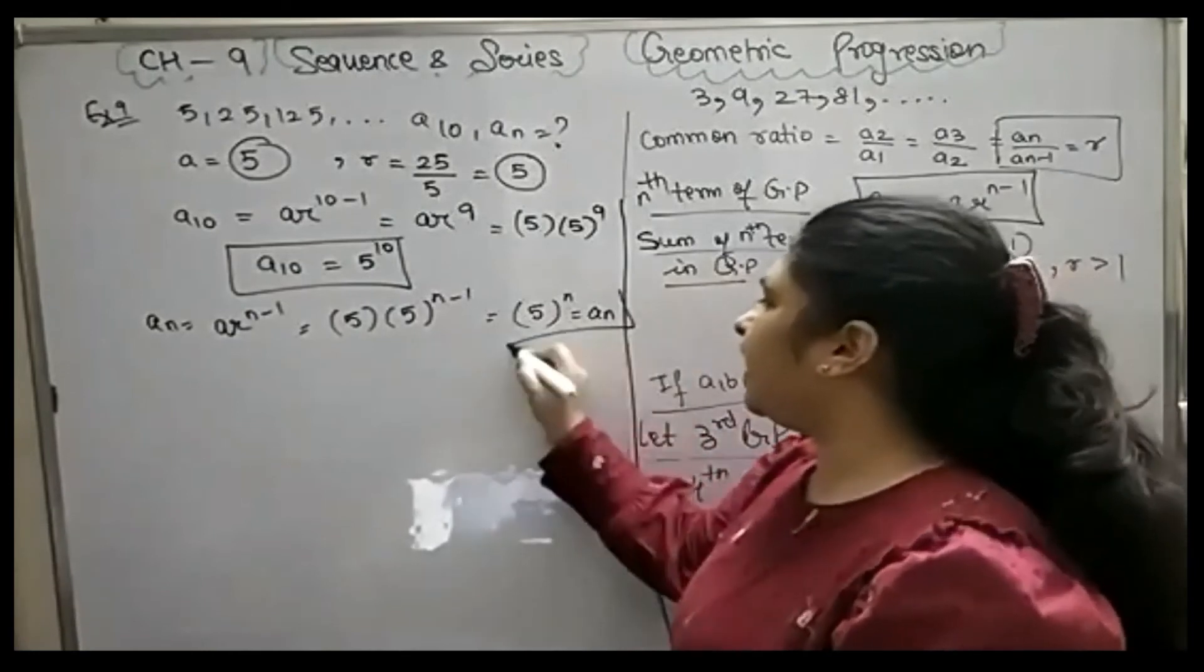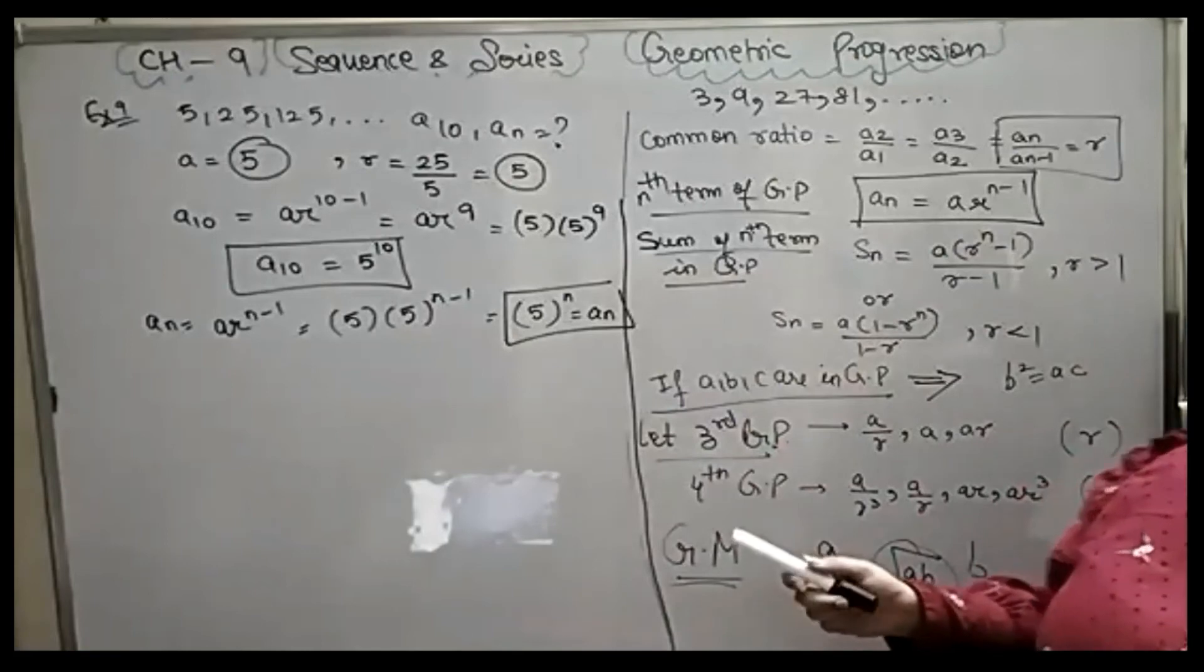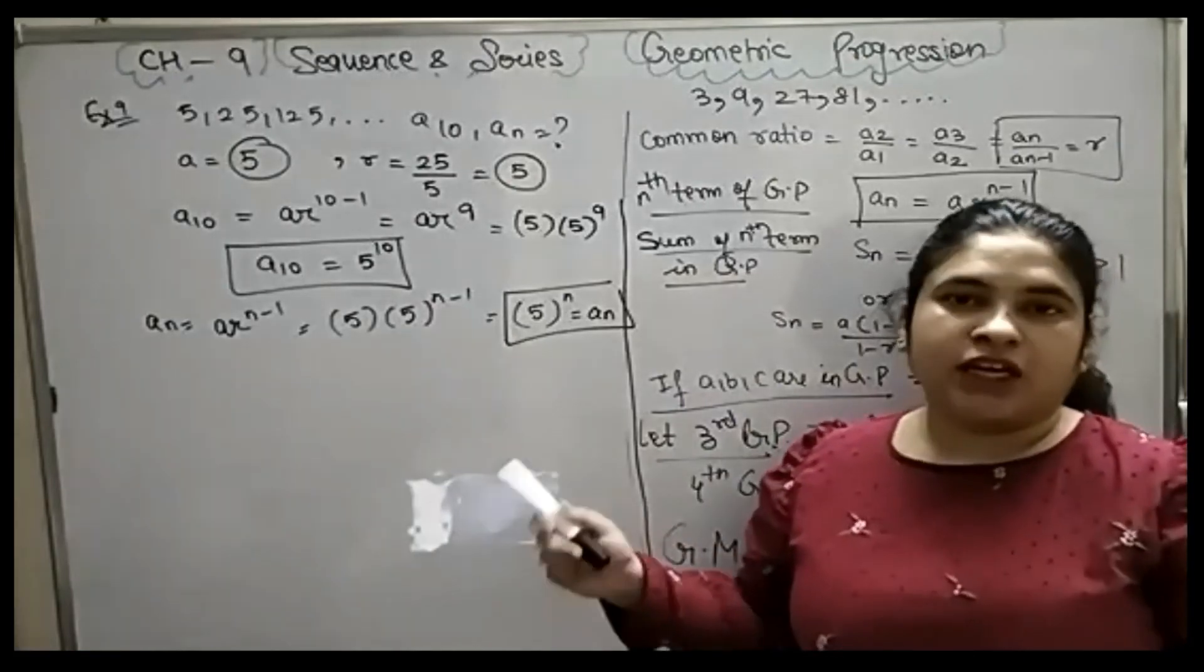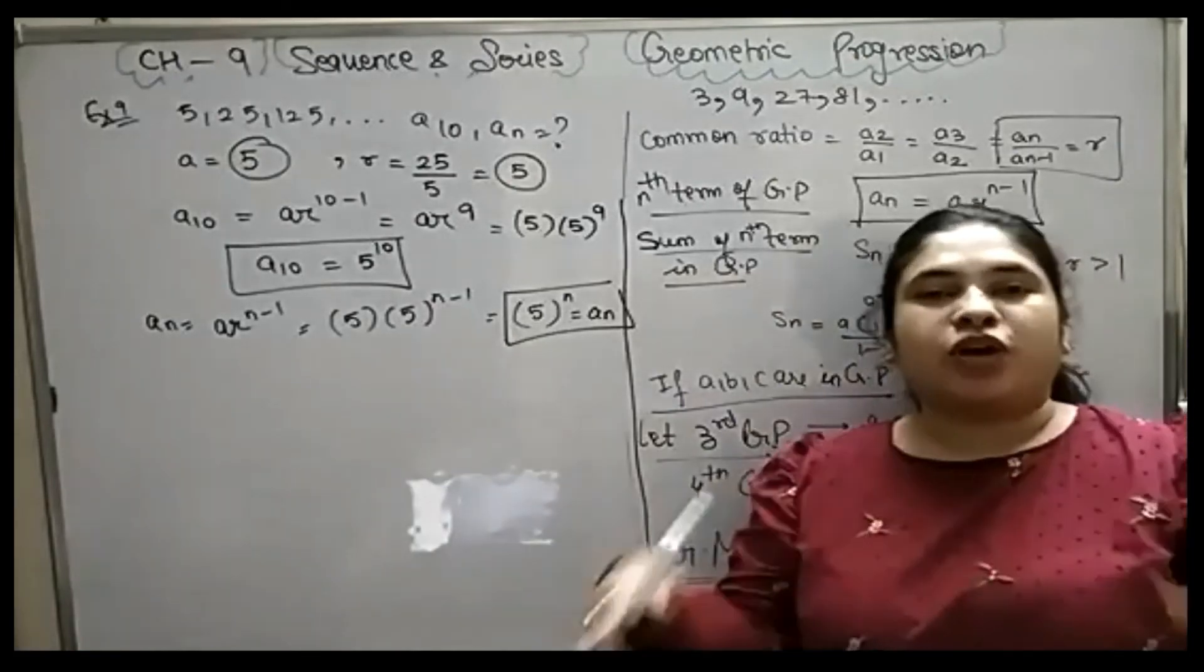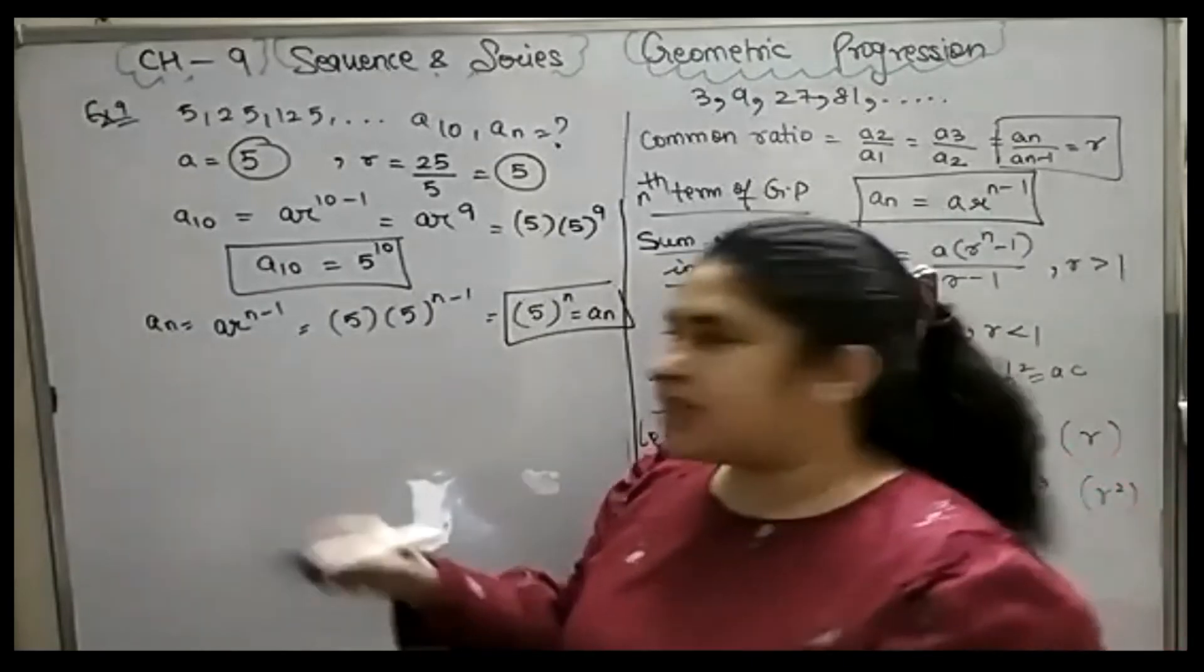So, what is the GP's nth term? 5 to the power n. It is clear. What do I want to say? Example number 9. If I have given any GP, and if I have to find any term, then how will I take care of it?